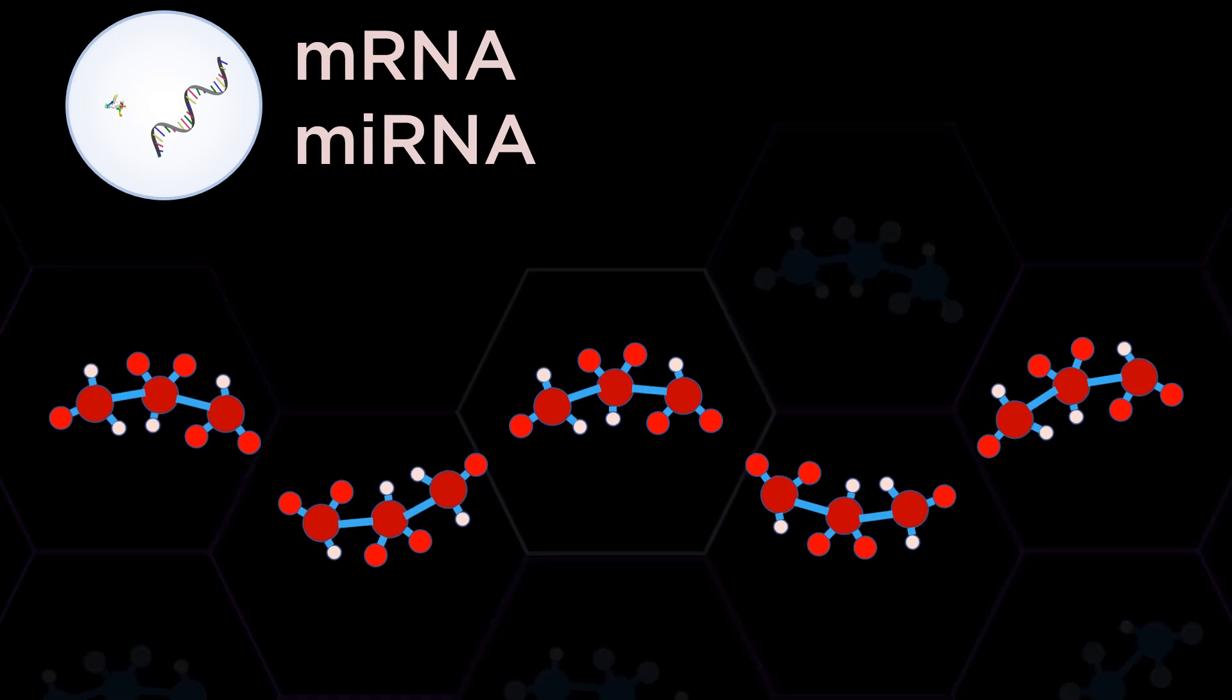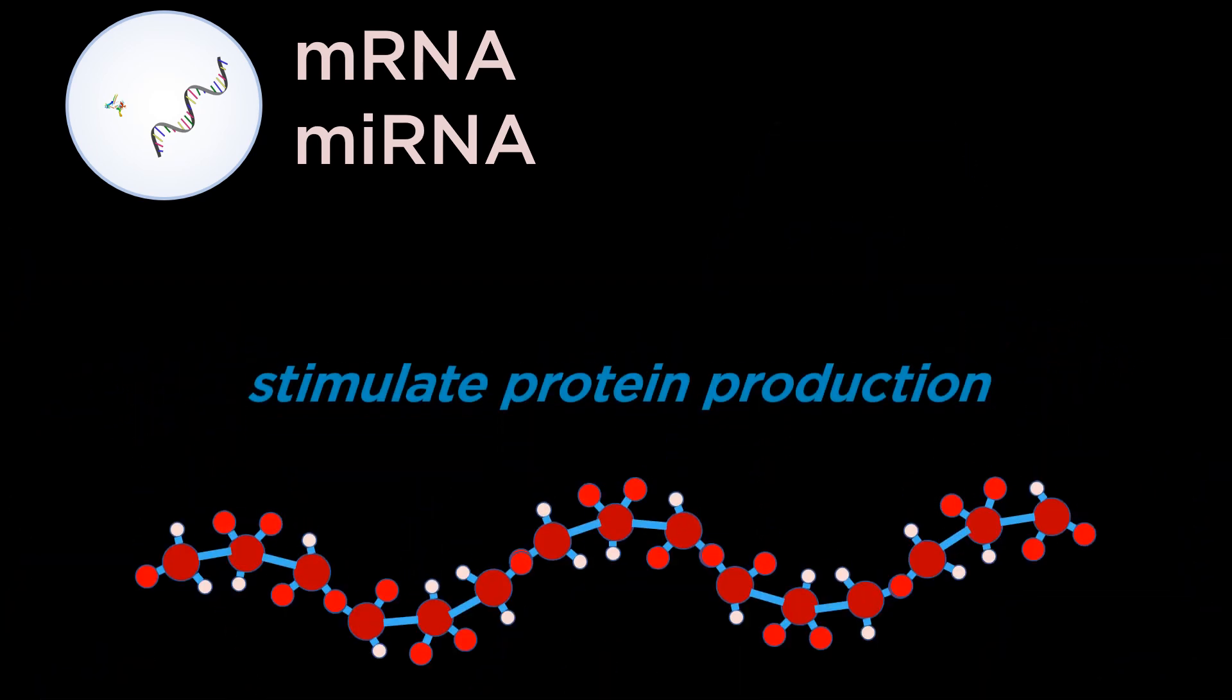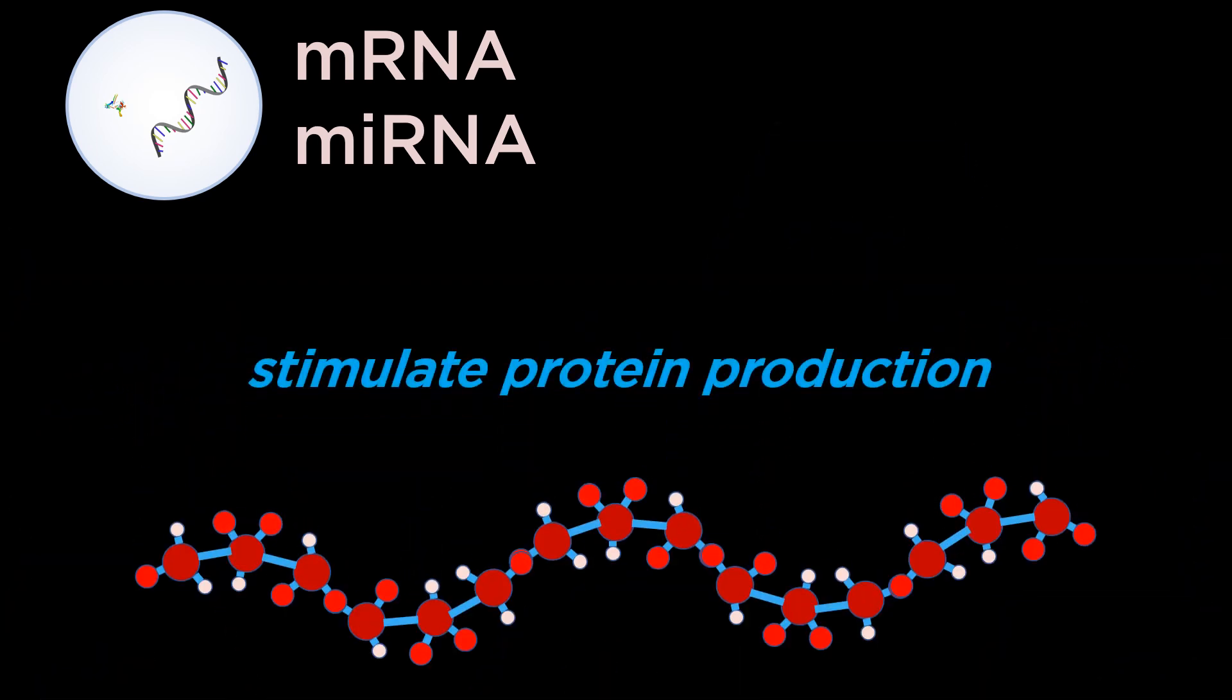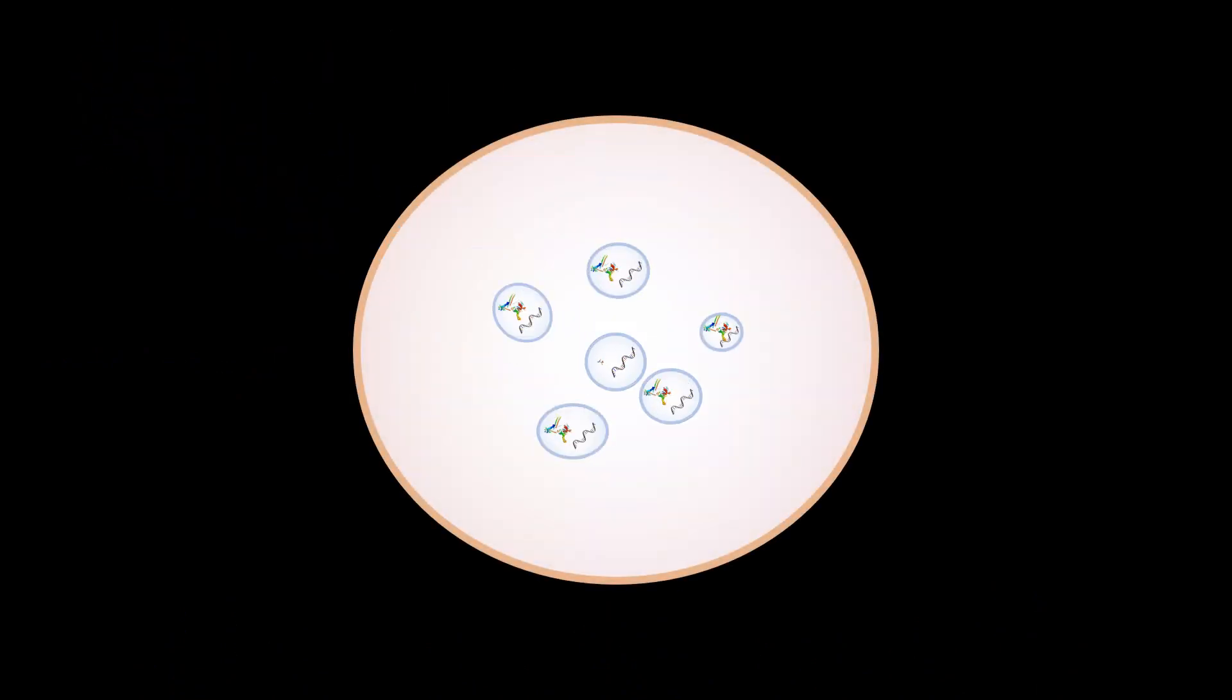mRNA and microRNA are important because they carry the instructions to the recipient cell to stimulate the production of proteins. These tiny vesicles are then secreted out of the cell membrane, where they are absorbed by other cells.